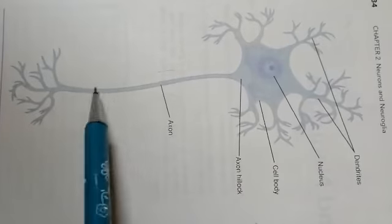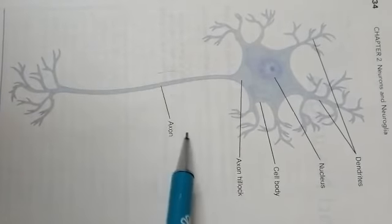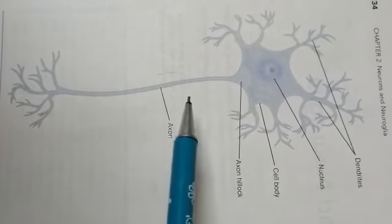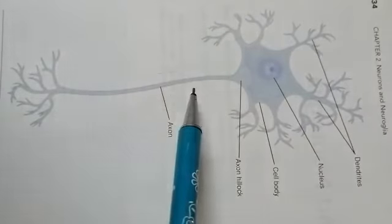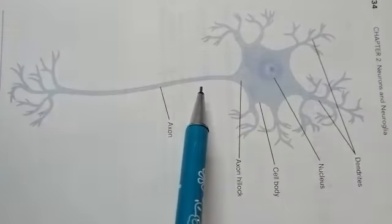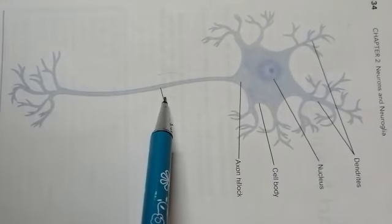Number two, it is the myelination. There is presence of a myelin sheath over the axon which is important for the saltatory conduction of a nerve impulse. That means there is a faster rate of nerve conduction due to the presence of myelin sheath in the axon.